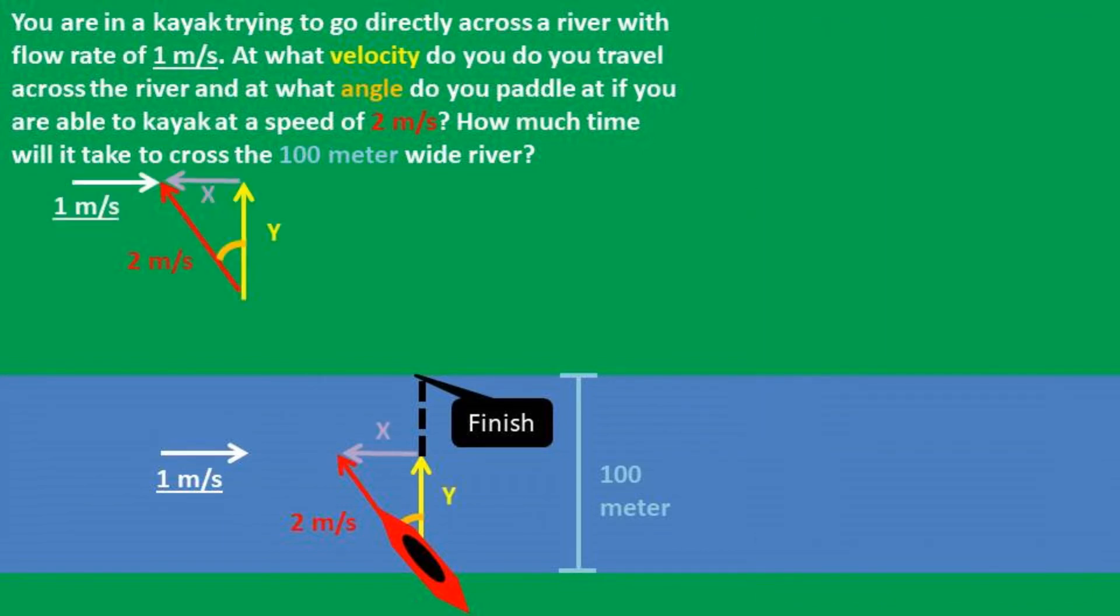The first step of this problem is to make the vector of the boat into a right triangle with a hypotenuse being the boat's velocity. We can then break it into x and y vectors.